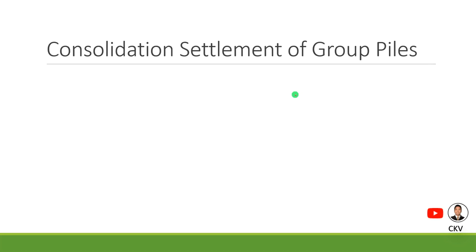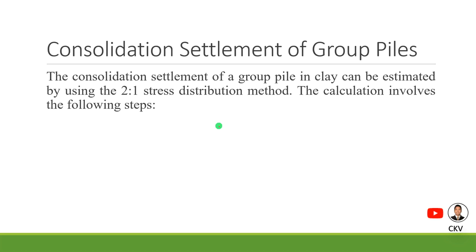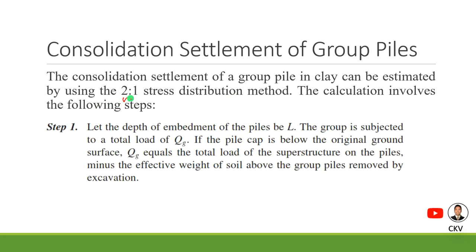As we have discussed the capacity and efficiency of group piles, we are now set to determine the consolidation settlement of group piles. The consolidation settlement of a group pile in clay can be estimated by using the 2-to-1 stress distribution method, which is 2 vertical to 1 horizontal.